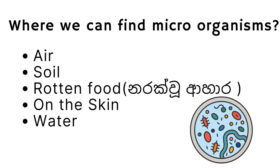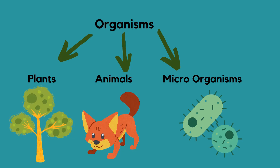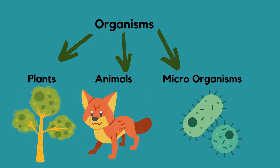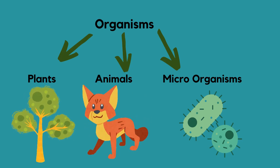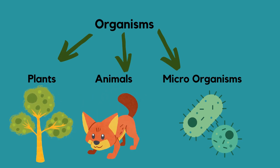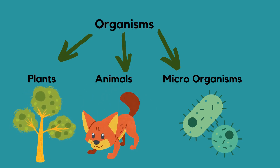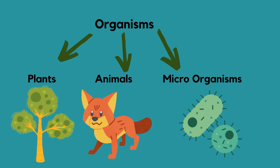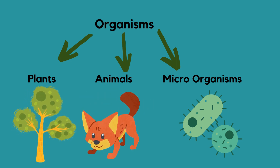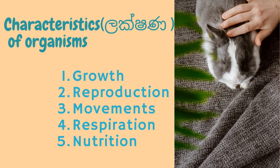Where can we find microorganisms? They are found in air, soil, rotten food, on the skin, and in water. So we can divide organisms into three main groups: plants, animals, and microorganisms.